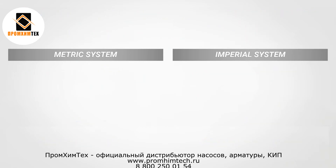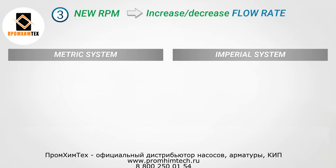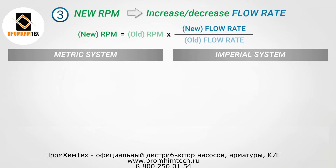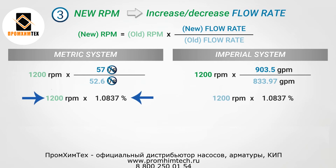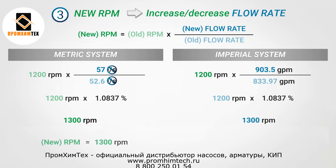The next value we are going to calculate is the RPM of the pump: what RPM do we need if we want to increase or decrease the flow rate? The new RPM equals the old RPM value multiplied by the division of the new flow rate by the original flow rate. Following this calculation, you cancel out the liters per second and find a ratio that, multiplied by the original RPM, results in 1300 RPM — the rotation speed the impeller must reach to sustain the new flow rate.